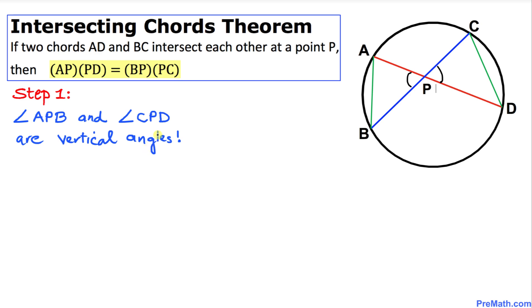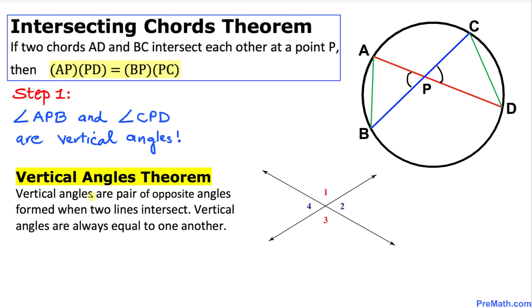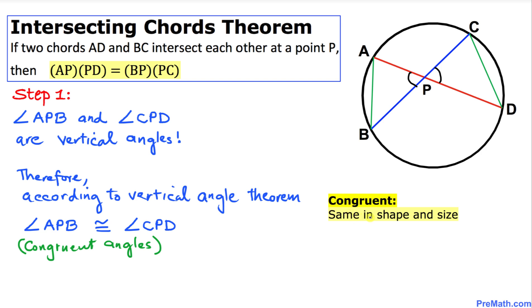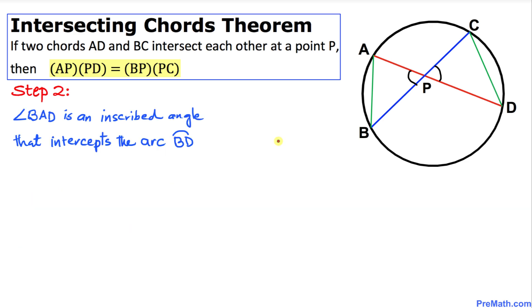Angles APB and CPD are vertical angles. The vertical angles theorem states that vertical angles are a pair of opposite angles formed when two lines intersect, and vertical angles are always equal to each other. Therefore, according to the vertical angles theorem, angles APB and CPD are congruent.